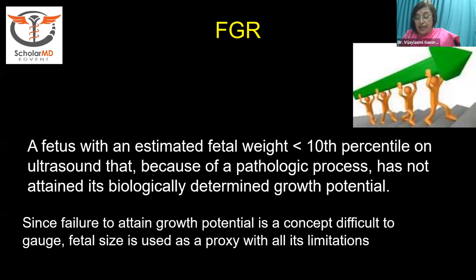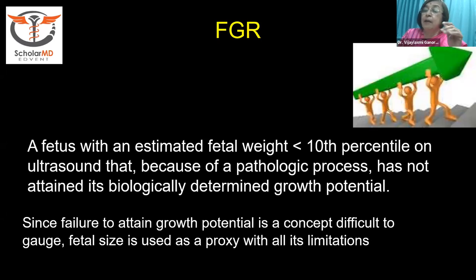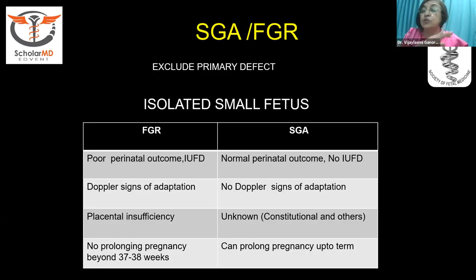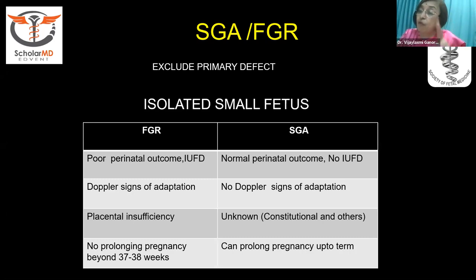Sometimes you may have an FGR baby not at the 10th percentile. If you see the growth scans, you may find it was growing at, say, the 75th percentile and then there is a sudden drop across the percentiles — that is also a growth-restricted baby. Or there may be a single Doppler criterion that qualifies it as growth restricted.